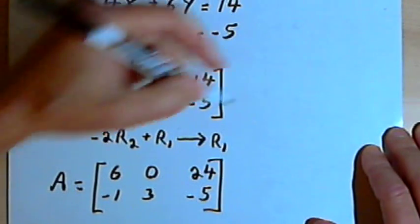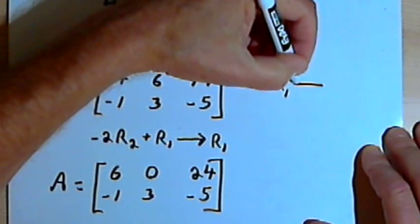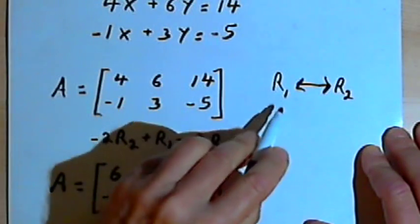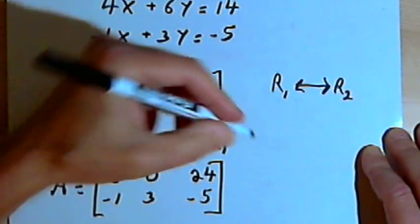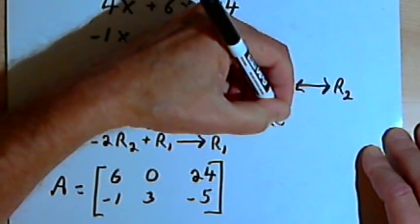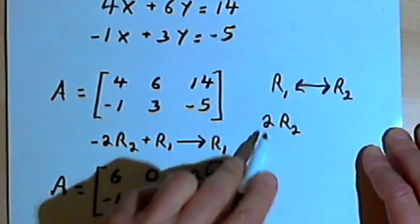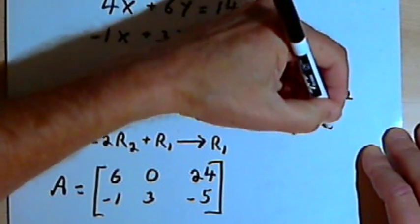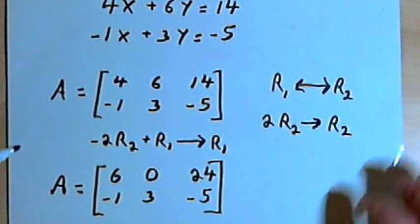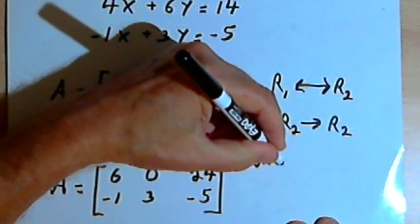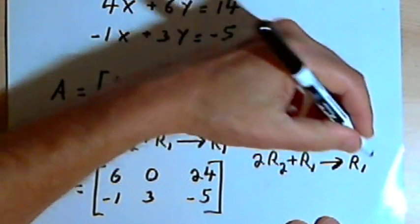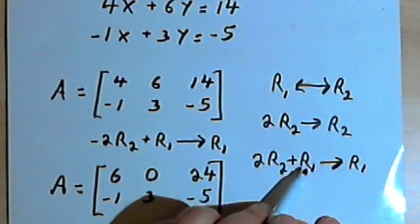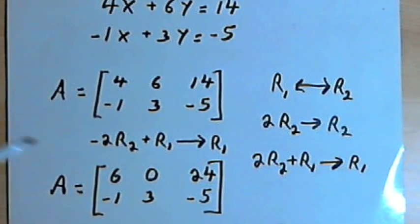To review those three operations: we can swap rows, using a double-headed arrow — r sub 1 double-headed arrow r sub 2 shows we're swapping rows 1 and 2. We can multiply a row by a constant — 2 times r sub 2 becomes the new row 2. Or we can multiply a row and add it to another row to change that second row — for example, 2 times row 2 plus row 1 becomes the new row 1. Those are your basic row operations. Take care, I'll see you next time.